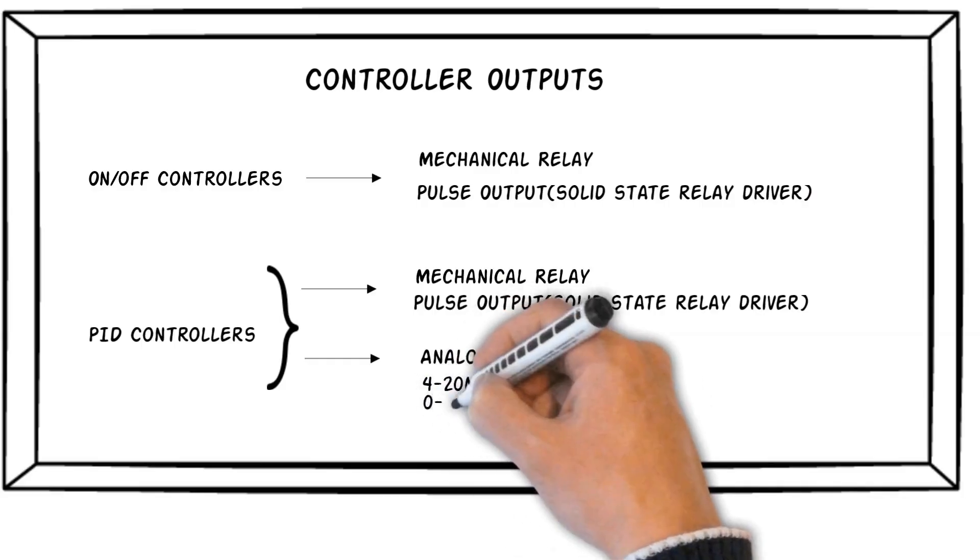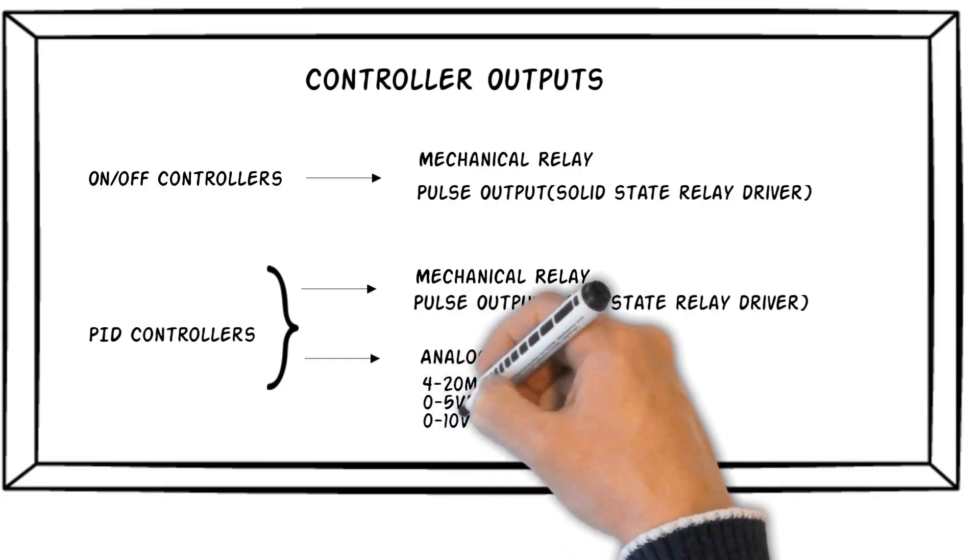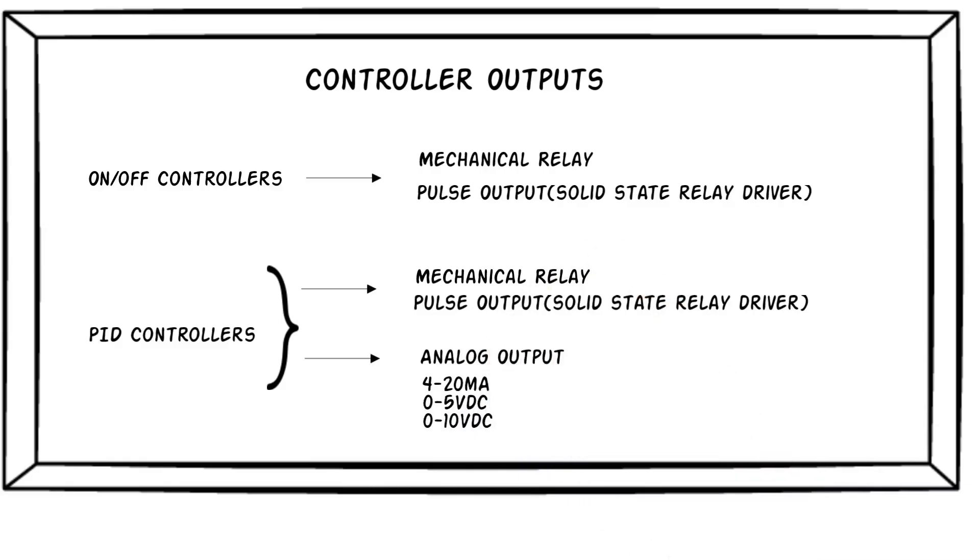Analog outputs are often used in flow or pressure control applications and not commonly used for temperature control, so we won't spend any more time talking about them in this video. Relay and pulse outputs are commonly used in PID temperature control. However, there is an important difference in the way that they are used for PID control versus on-off control.